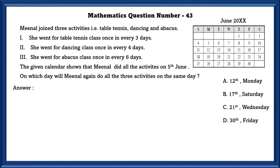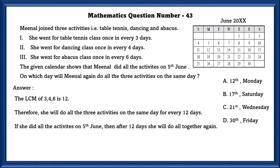Mathematics question number 43. Meena joined three activities: table tennis, dancing, and abacus. She went to table tennis class every three days. She went to dance class every four days. She went to abacus class once every six days. The given calendar shows that Meena did all five activities on 5th June. On which day will Meena again do all the activities on the same day? In order to find this question, we have to find the LCM of three, four, and six. The LCM of three, four, and six is 12. Therefore she will do all the activities on the same day every 12 days. If she did all the activities on 5th June, then 5th June plus 12 more days, that is 17th, on Saturday.